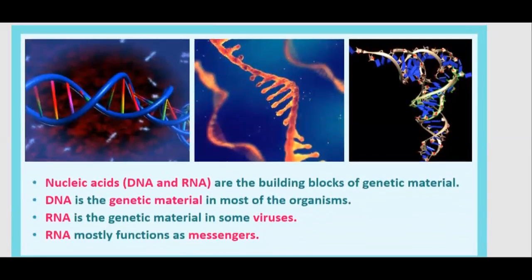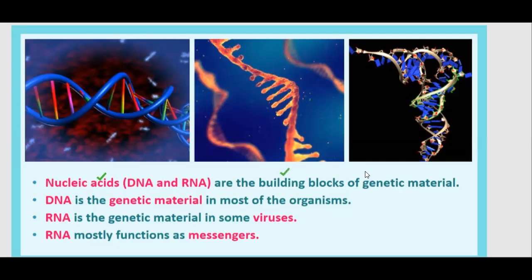We are going to start with the introduction to the Nucleic Acids. Nucleic Acids — that is the DNA and the RNA — are the building blocks of the genetic material. Our genetic material is DNA and RNA. Our chromosomes are DNA and histone. Histones are the proteins that help to bind the DNA to their position. DNA is the genetic material in most of the organisms, and RNA is the genetic material in some viruses. In organisms whose main genetic material is DNA, RNA functions as the messenger.